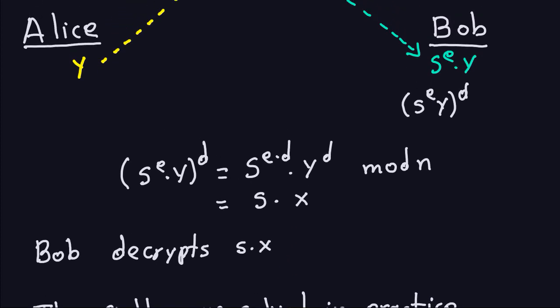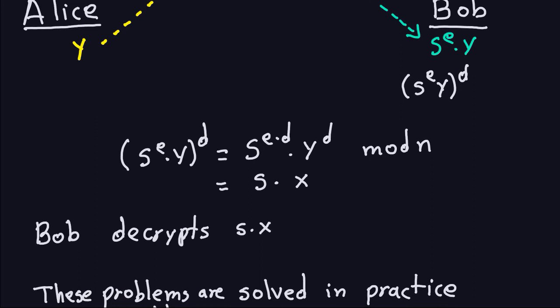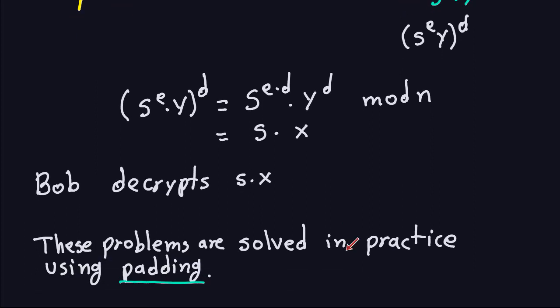Imagine how bad this will be if the plaintext X was amount of money that Alice might be sending to Bob. The attacker might modify that amount of money by some factor S, and Bob will not realize that this was actually not the plaintext that Alice was trying to send. These problems are solved in practice. When the RSA is actually implemented in the real world, there is some padding, which actually introduces a little bit of randomness in the ciphertext.